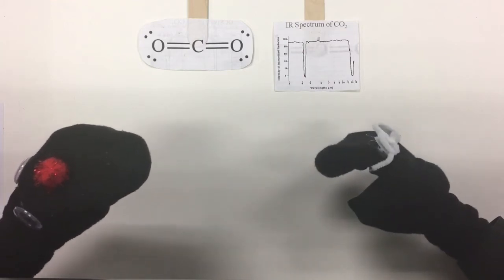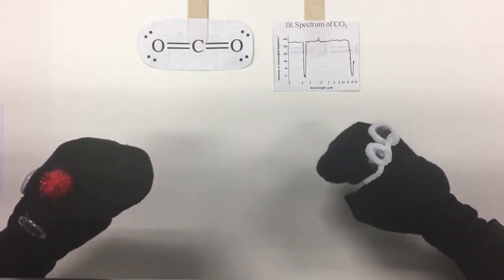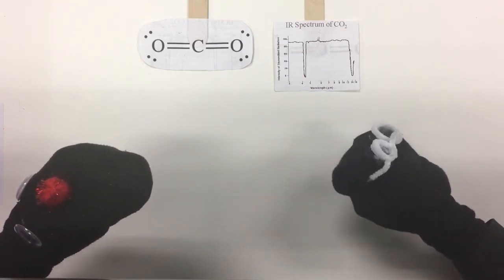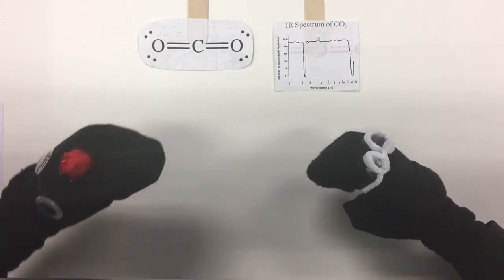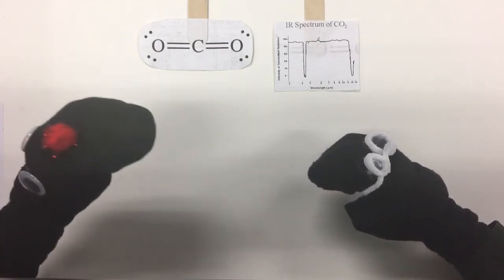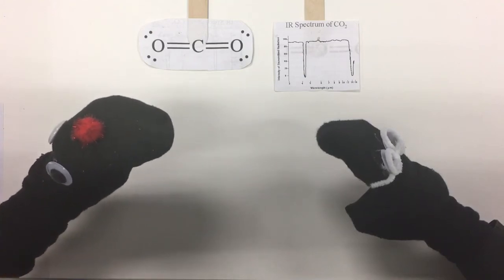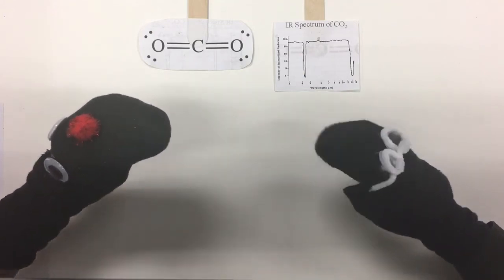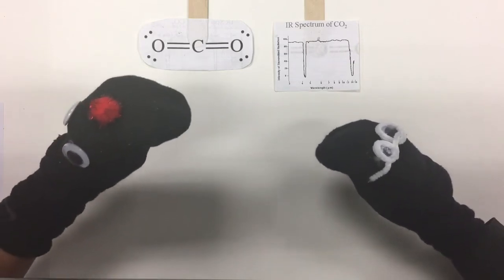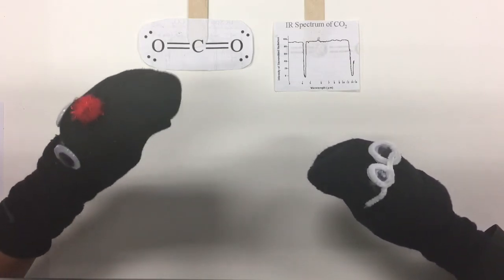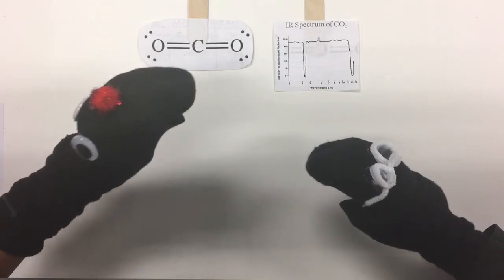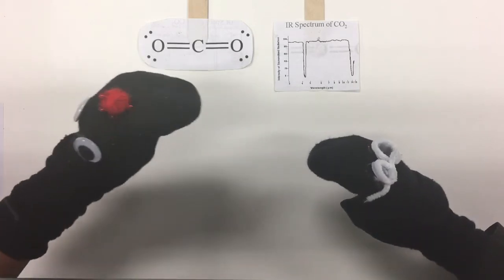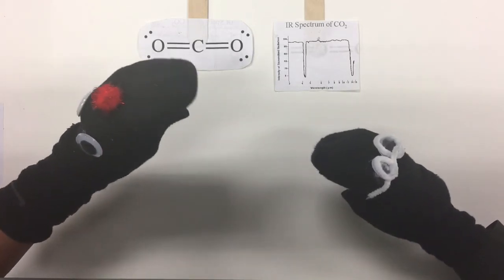Oh, why are there only two bands? Shouldn't there be four? Do you have any idea why that is? Does it have to do with the change in the dipole moment of the molecule? Exactly. If you remember our vibrational modes and the structure of CO2, you notice that only two vibrational modes cause this molecule to undergo a change in dipole moment.